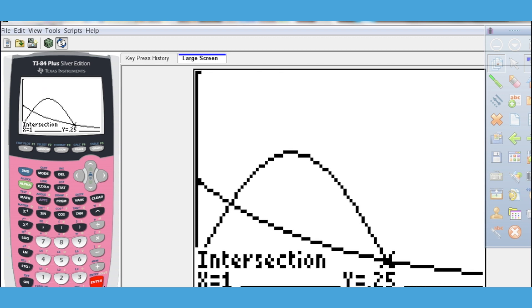So back to the graph. We're going to do that again. 2nd, calc, 5. But now we want the intersection that's way over here, right? So I'm going to toggle over there. So is this the first curve? Yes. Is this the second curve? Yes. Am I closer to my guess? I hope so. I hope it takes me to that one. And the intersection actually is 1.